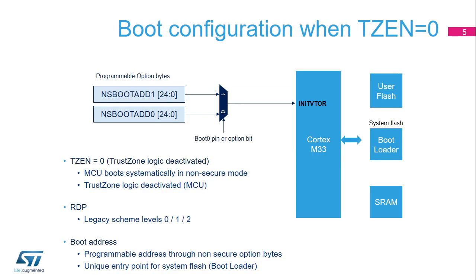This slide details the boot configuration when TrustZone is disabled. The microcontroller boots in non-secure mode. The readout protection can be set to levels 0, 1, or 2. The boot address is programmable through non-secure Option Bytes. The boot program can be mapped anywhere in the internal memories, flash or SRAM. The bootloader has a unique entry point in system flash, which is the default value of NSBoot ADD1.